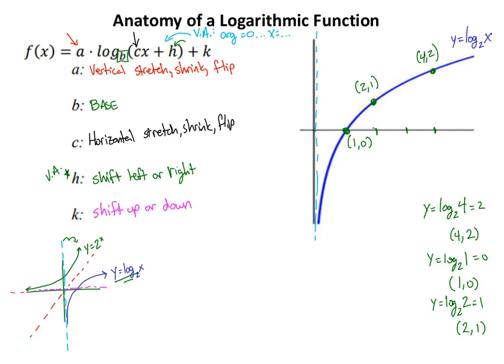Notice how the graph races off to the right. At height one, I go one base-length to the right from the vertical asymptote, then the base squared to the right for height two. It's the same idea as exponentials but reflected — racing off to very high x values. We have an example that models this, and it's all about that movement racing to the right.